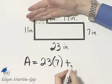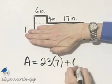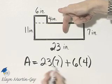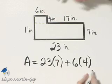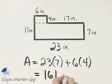Then I'll add to it the area of the smaller rectangle on top, which is 6 times 4. This is the area of the larger rectangle, plus the area of the smaller rectangle. So if I multiply here, I'll have 161.